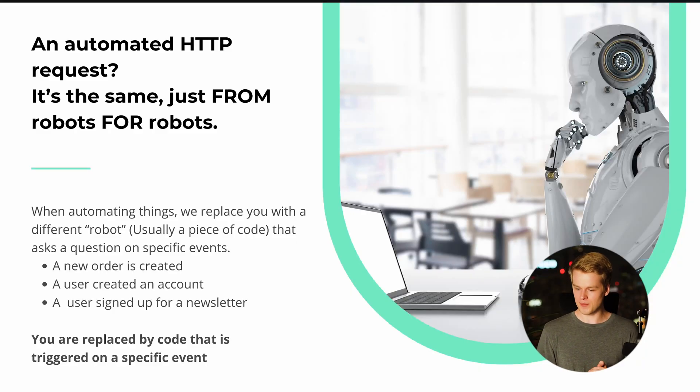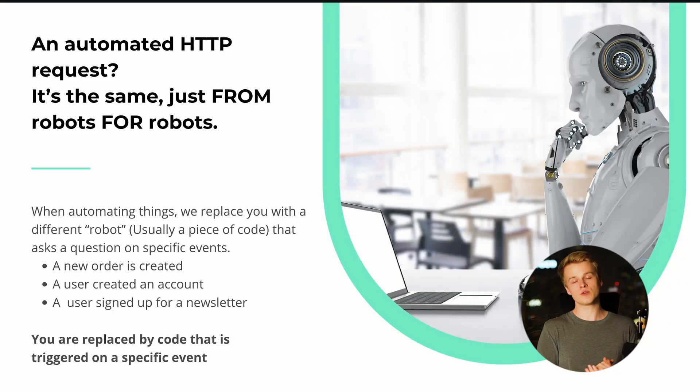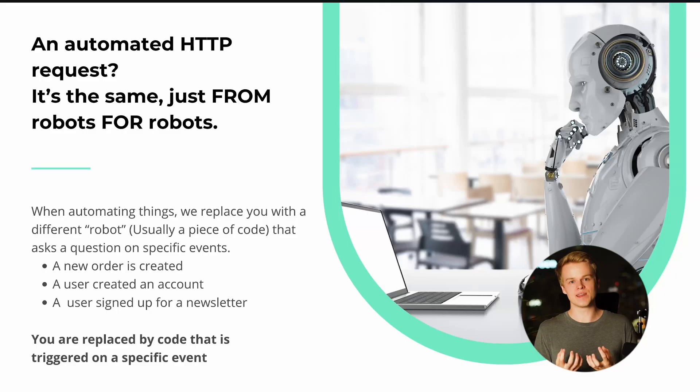Three common events I use to trigger these kinds of requests: first, an order is created. If you have an online shop, whenever a new order comes in, some code runs in the backend. You can inject logic that sends that information to a different URL — for example, to trigger a newsletter signup in MailChimp, Campaign Monitor, or ActiveCampaign. The main thing to understand is that you completely replace yourself and let robots talk with robots.